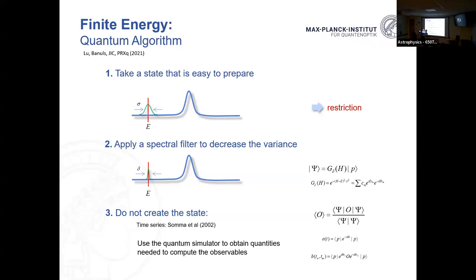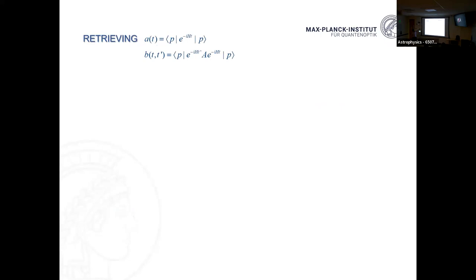Concretely: start with your easy-to-prepare initial state, evolve for some time, insert a unitary gate related to the observable, evolve for some other time, and check the overlap with the initial state. The absolute value of these complex numbers is relatively easy to measure by checking if you end up in the same initial state. The phase is harder to measure and can be obtained using ancilla qubits or other methods. We proposed ways to do this without needing strong ancilla requirements.